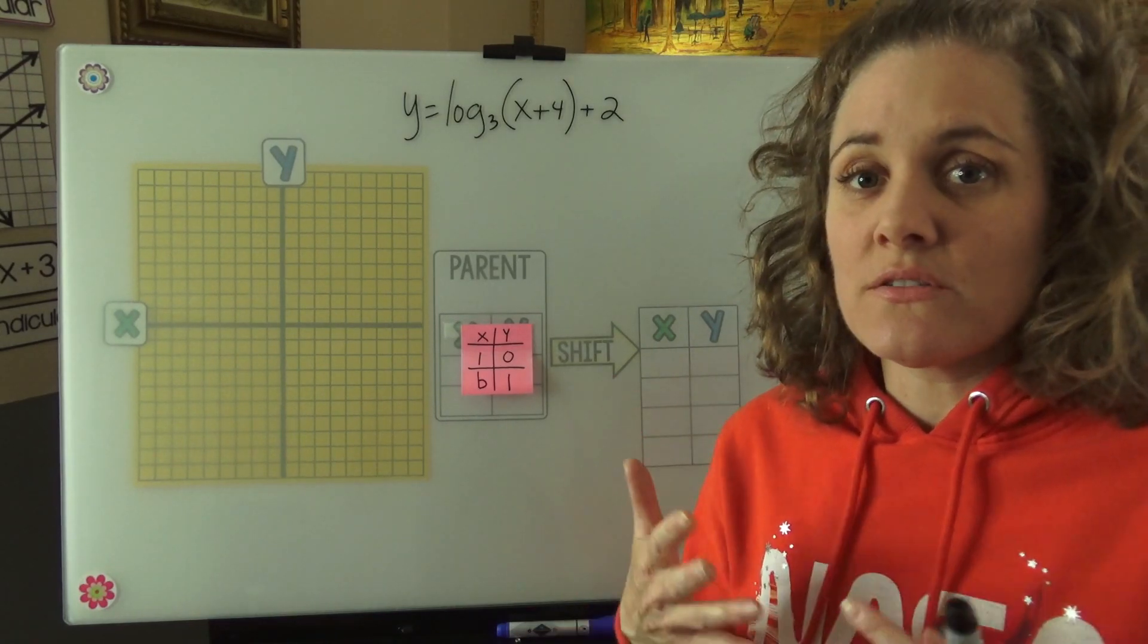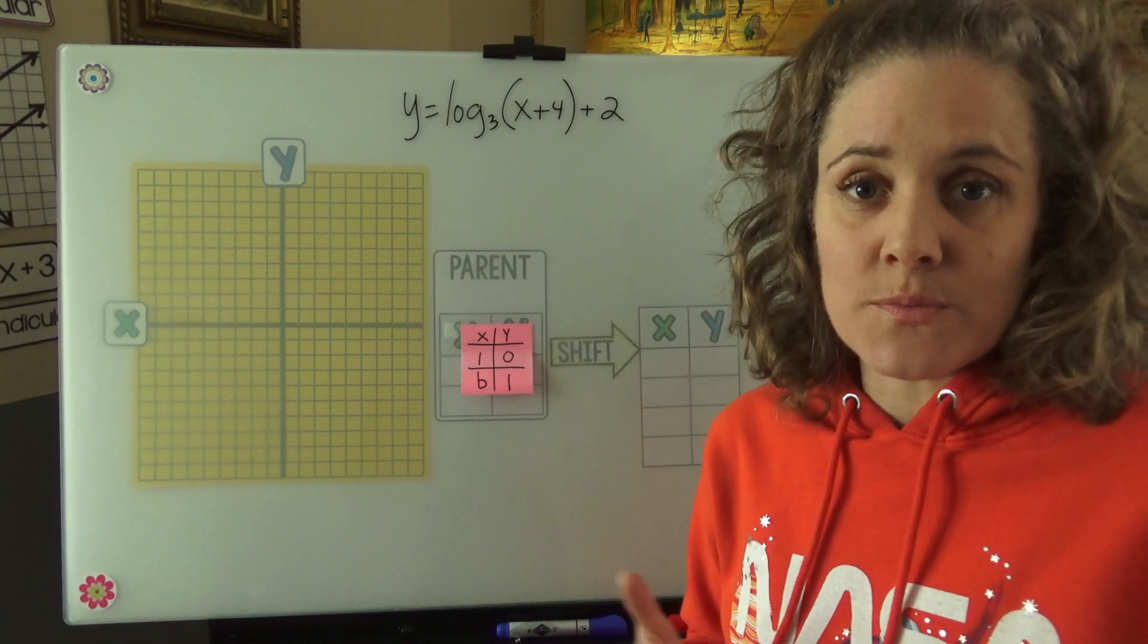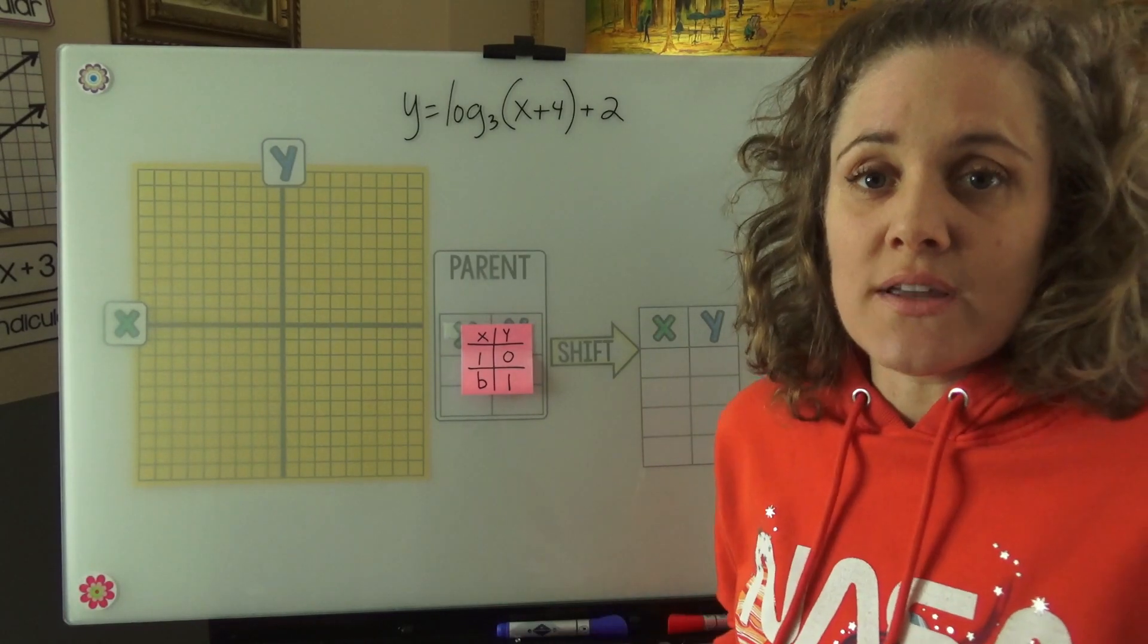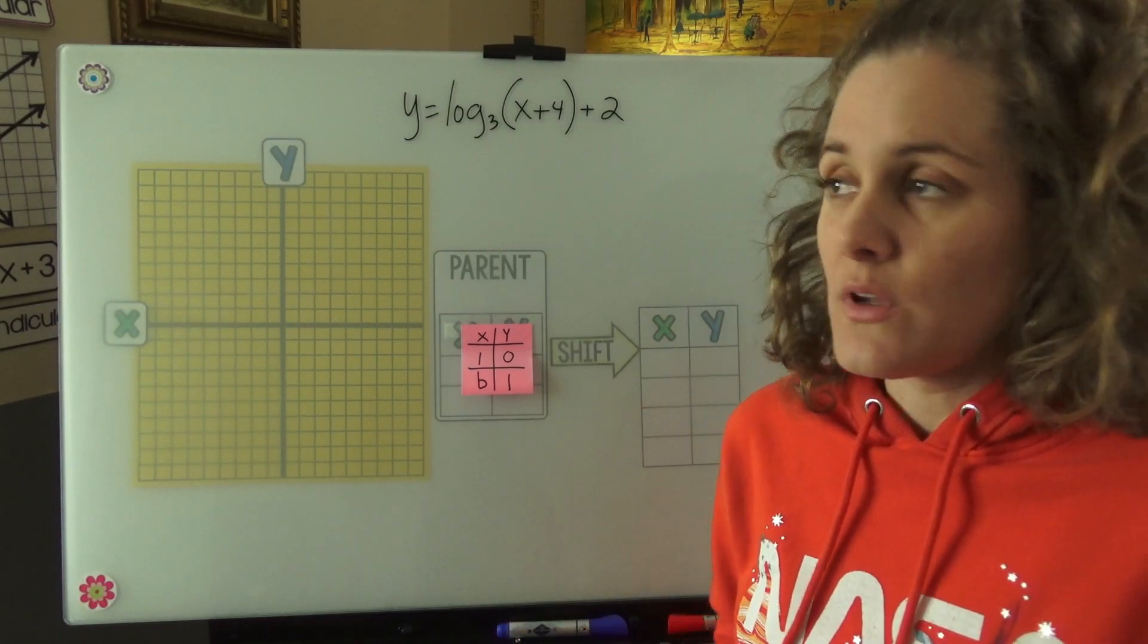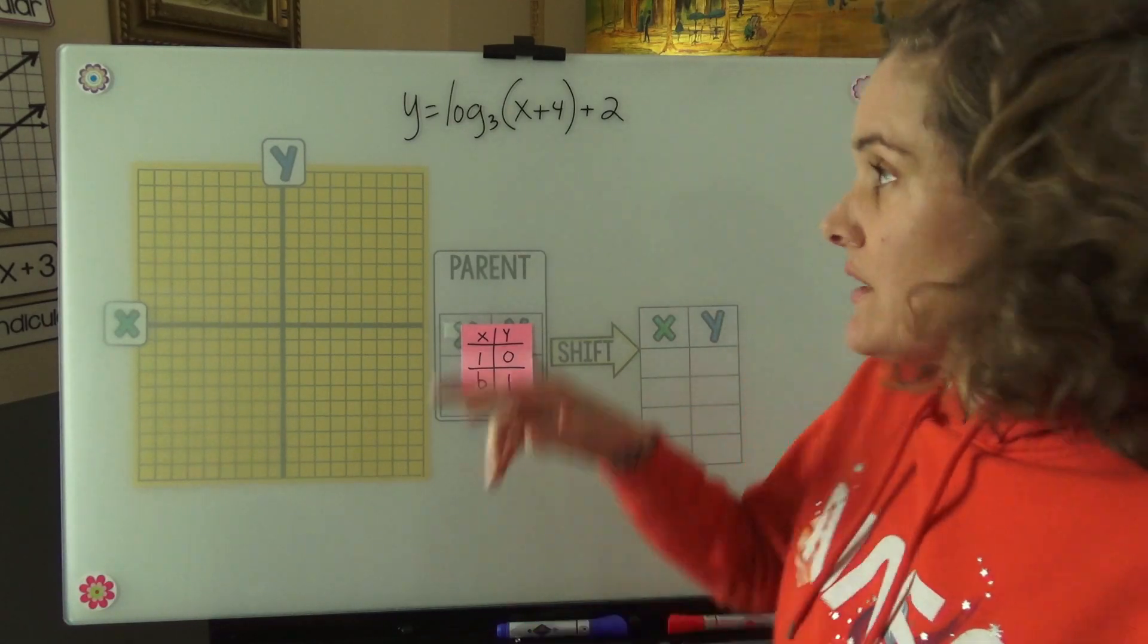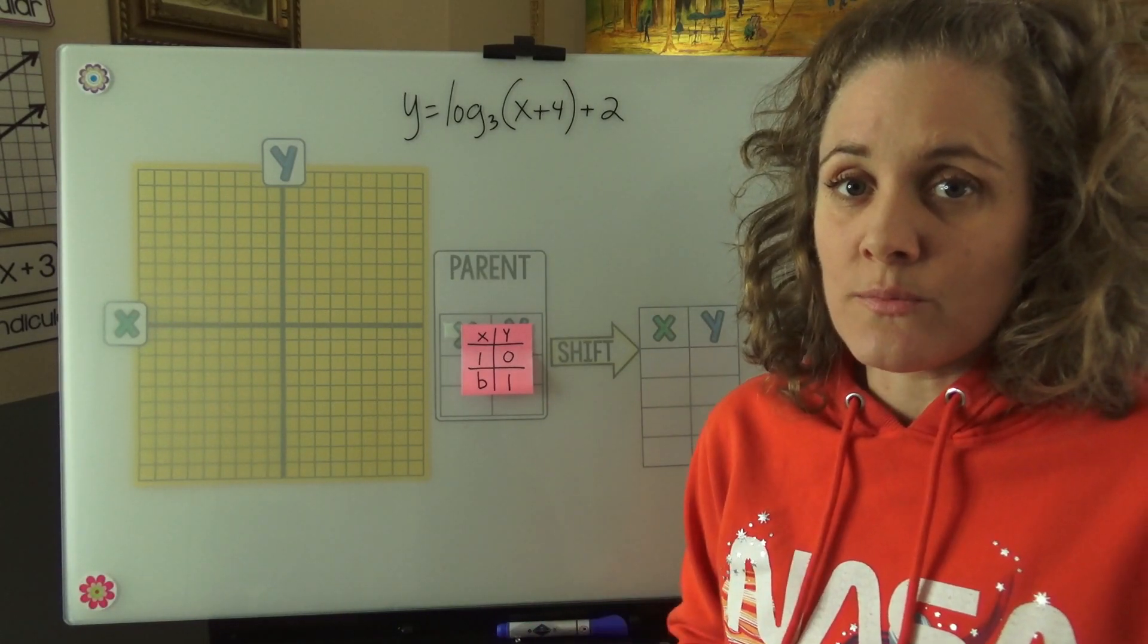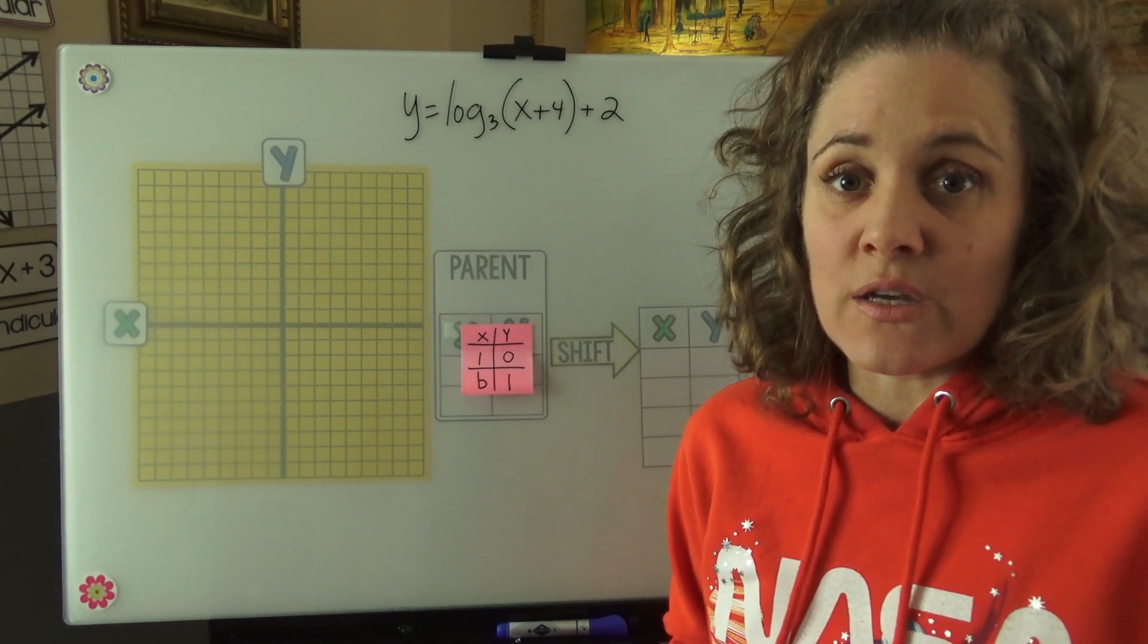We want to remember first that these are inverses of exponential functions. So if we know what exponential functions look like, we know what log functions look like too. The very first thing we can do is sketch in the asymptote. With exponential functions, the asymptote is a horizontal asymptote. So with log functions, our asymptote is going to be a vertical asymptote, and we find that here. Inside we have an x plus 4. We know that inside is opposite. So our asymptote is going to be x equals negative 4.